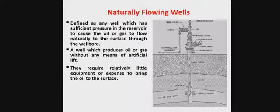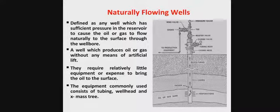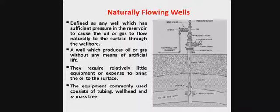Naturally flowing wells require relatively little equipment or expense to bring the oil to the surface. You don't need artificial lift techniques. The equipment commonly used consists of the tubing, the well head, and the Christmas tree. The driving force in a naturally flowing well is pressure — we rely on a pressure drop to move the oil to the surface.